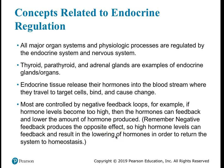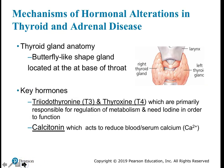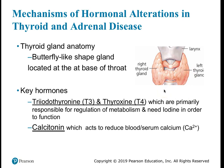High hormone levels feed back to result in lowering of hormones, returning the body to homeostasis. The thyroid gland is located at the base of the throat in a butterfly shape, with right and left lobes just below the larynx. It produces T3 (triiodothyronine) and T4 (thyroxine), which regulate metabolism and require iodine to function.